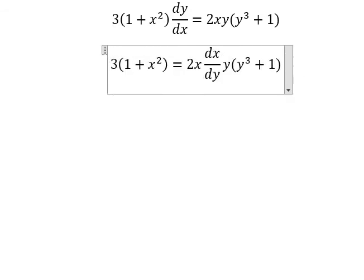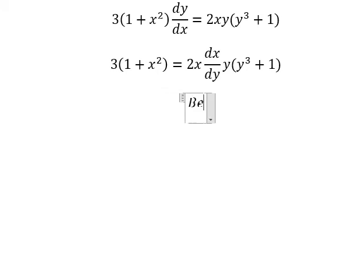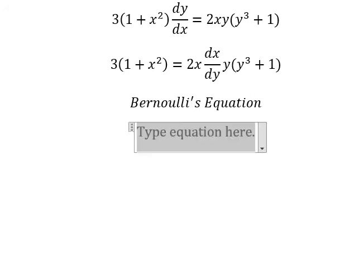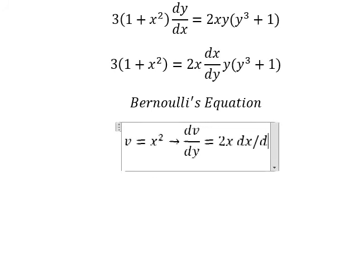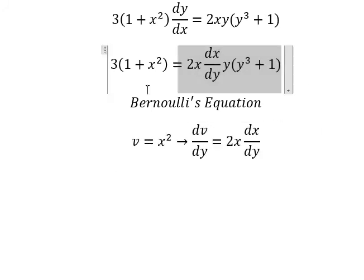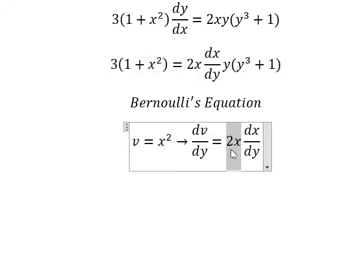And now we can apply Bernoulli's equation. So I will put v equal to x squared. If we take the derivative with respect to y for both sides, we have dv over dy equal to 2x dx over dy. This is the first derivative of x squared.